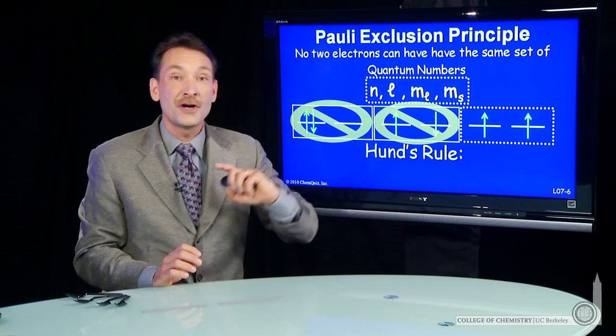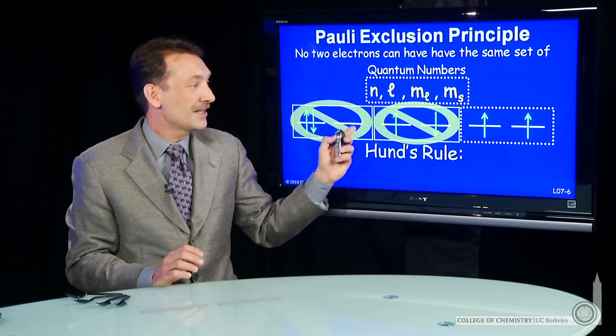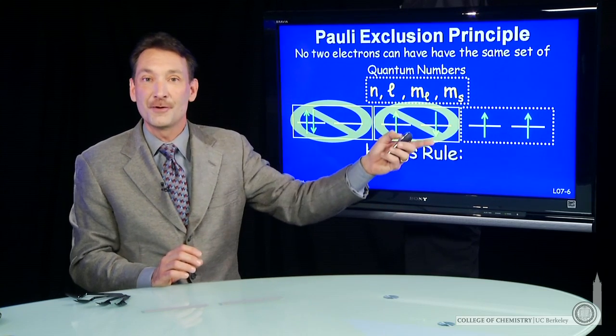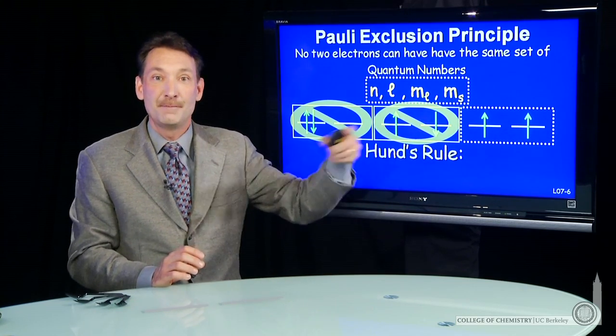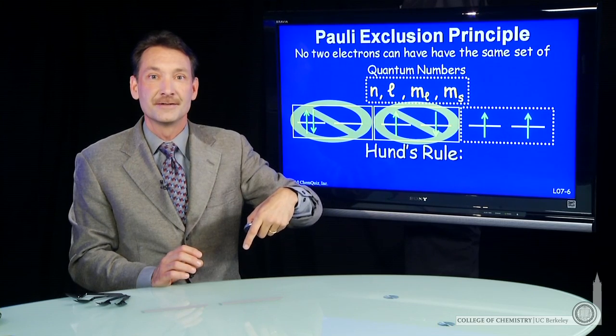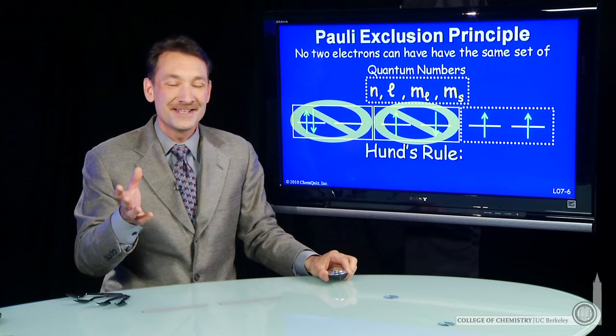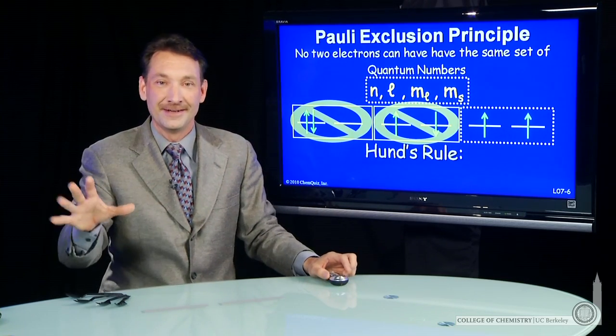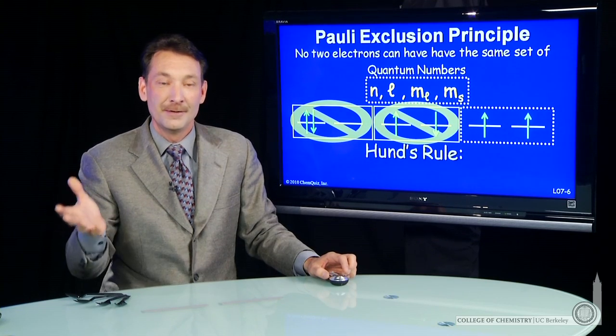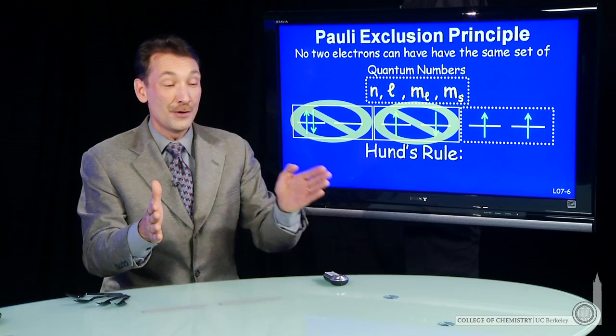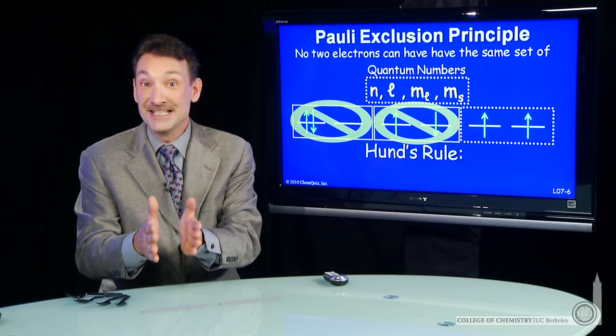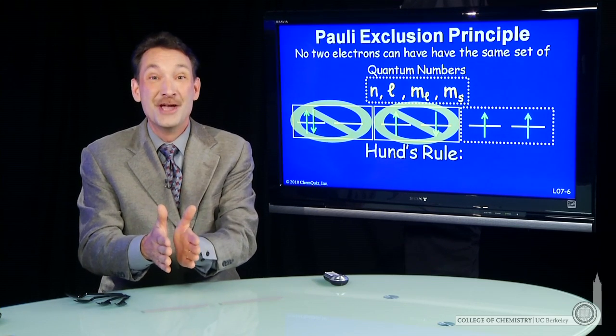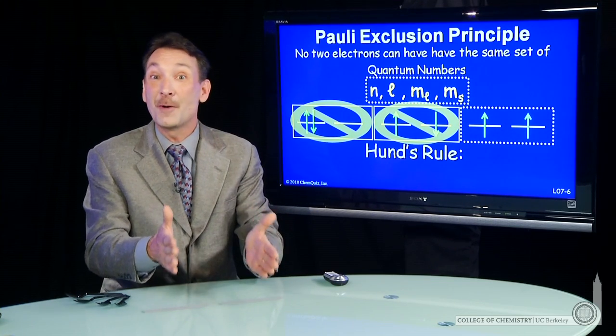So this is called Hund's rule. And it turns out electrons enter degenerate orbitals the same way people get on a bus. You know, if you get on a bus, there's a lot of seats. And they each hold two people. But if there's someone sitting in one seat, do you go in and sit right next to them in the same seat? No.